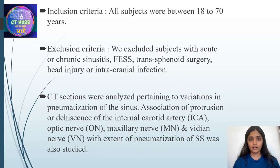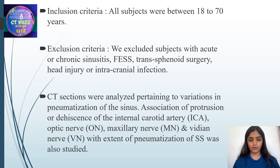Inclusion criteria: All subjects were between 18 to 70 years. Exclusion criteria: We excluded patients with acute or chronic sinusitis, FESS, transsphenoidal surgery, head injury, or intracranial infection. CT sections were analyzed pertaining to variation in pneumatization of the sinus, association of protrusion or dehiscence of the internal carotid artery (ICA), optic nerve (ON), maxillary nerve (MN), and vidian nerve (VN), with the extent of pneumatization of sphenoid sinus.